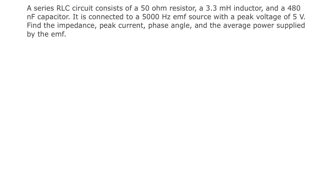A series RLC circuit consists of a 50 ohm resistor, a 3.3 millihenry inductor, and a 480 nanofarad capacitor. It is connected to a 5000 hertz EMF source with a peak voltage of 5 volts. Find the impedance, the peak current, the phase angle, and the average power supplied by the EMF.